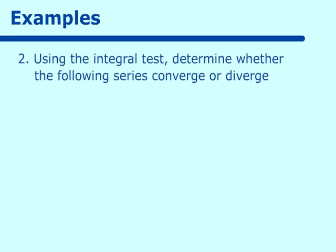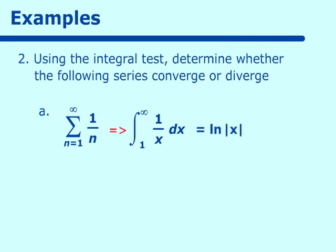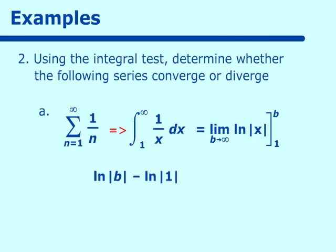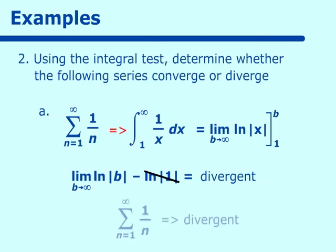Let's look at the sum when n equals 1 to infinity of 1 over n. We put that in integral form: the integral from 1 to infinity of 1 over x dx. Integrating gives ln of the absolute value of x, evaluated from 1 to b as the limit as b approaches infinity. We get ln of b minus ln of 1, which is ln of b minus 0. As b approaches infinity, ln of b is infinite. So this is divergent, and therefore the series of 1 over n is divergent. We'll revisit this with p-series.